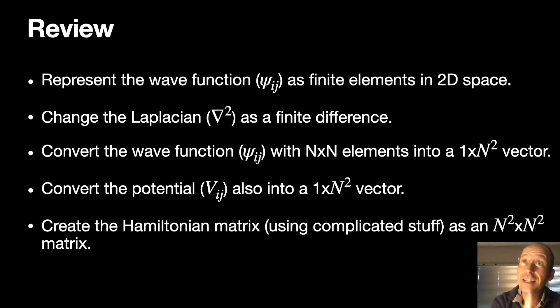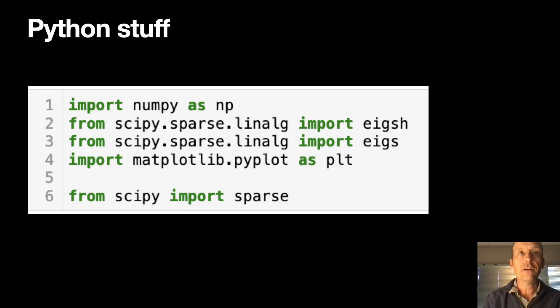And then create the Hamiltonian matrix. And that is an n squared by n squared, because we have a matrix inside of a matrix. So it gets kind of big. And then solve the eigenvalue problem. Now let's do the Python stuff.